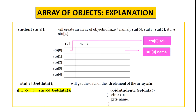The statement student stu[5] creates an array of objects of size 5: stu[0], stu[1], stu[2], stu[3] and stu[4]. All these array elements have two data members each: role and name. When we give the statement stu[i].get_data, it gets the data of the ith element of the array stu. For example, if i is 0, the statement becomes stu[0].get_data. When get_data is invoked for object stu[0], whatever values we input in role and name will be stored in stu[0].role and stu[0].name.